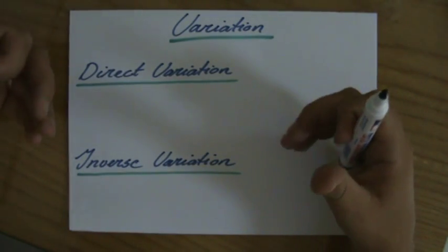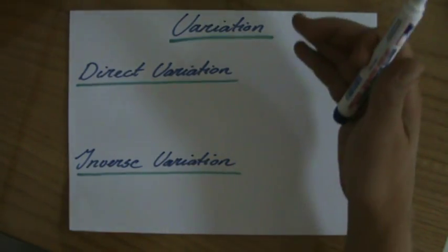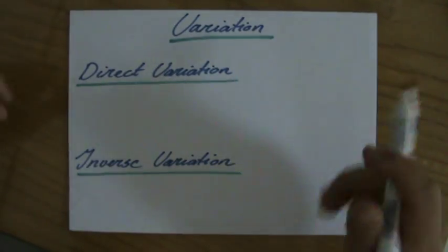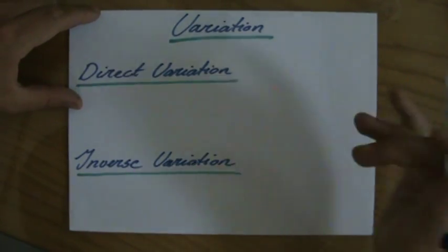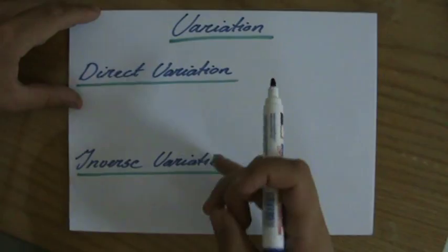Let's quickly summarize what we know about variation so far before we touch those inverse variation problems. We have direct variation, inverse variation.